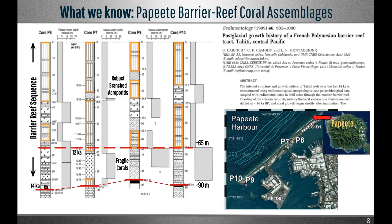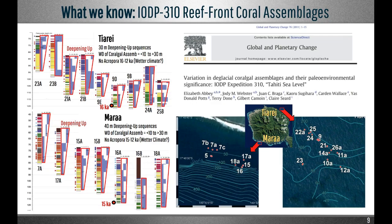We know that the barrier reef at Papiti started at 90 metres depth around 14,000 years ago — almost immediately after Meltwater Pulse 1A, the first major acceleration in post-glacial sea level rise. The barrier reef cores have a lagoonal assemblage at the base dominated by fragile corals, replaced at 65 metres by a reef crest assemblage dominated by robust, fast-growing acroporids. From the IODP cores, the reef front assemblages at Mara and Thierry started at 125 metres depth about 16,000 years ago, showing a deepening-up sequence. Acroporids were also absent before 12,000 years and then dominate after.